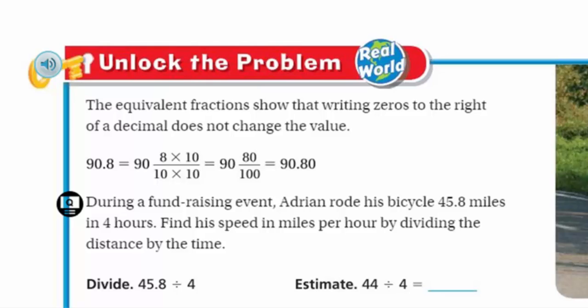For example, 8 tenths multiplied by 10 over 10 gives us 80 hundredths — the value hasn't changed. Whether you shade 8 tenths on a tenths grid or 80 hundredths on a hundredths grid, it's the same amount.